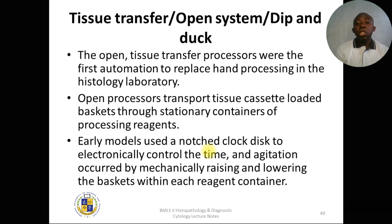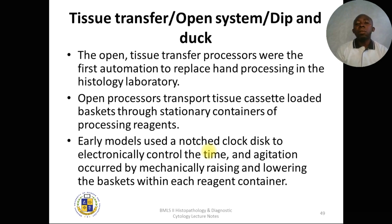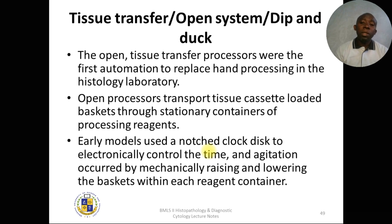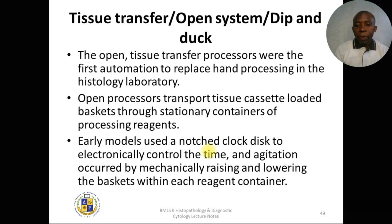Open processors transport tissue cassettes loaded in a basket through stationary containers holding the processing reagents. The cassettes are placed in baskets after grossing, and taken to the machine for processing. The containers are stationary — it is the tissue that moves into the respective containers. Early models used a notched clock disc to electronically control time, and agitation occurred by mechanically raising and lowering the basket within each reagent container.